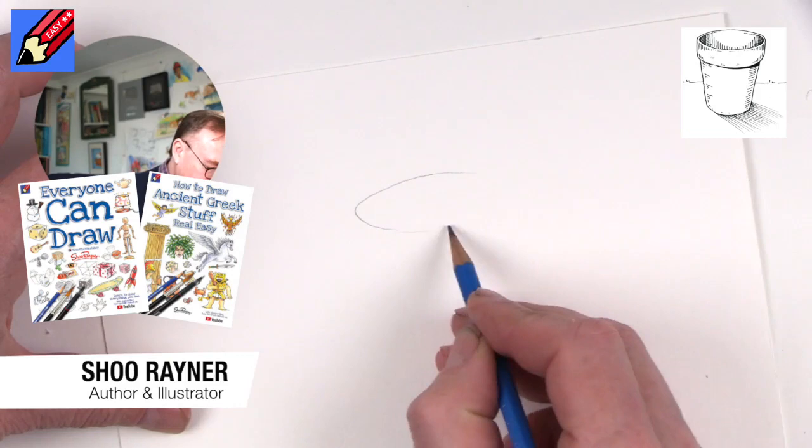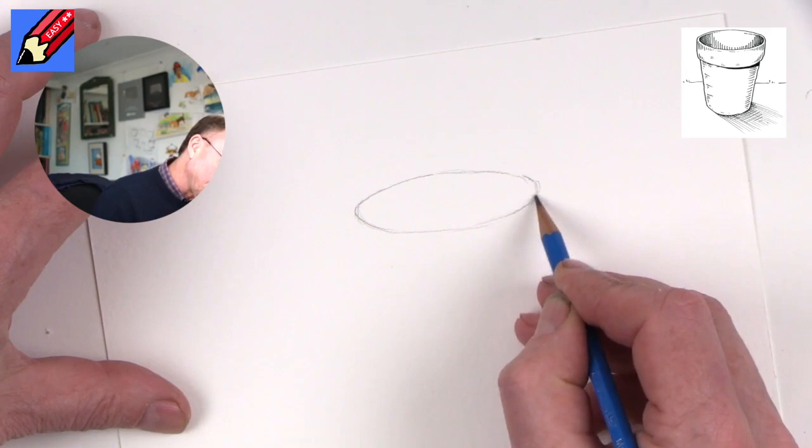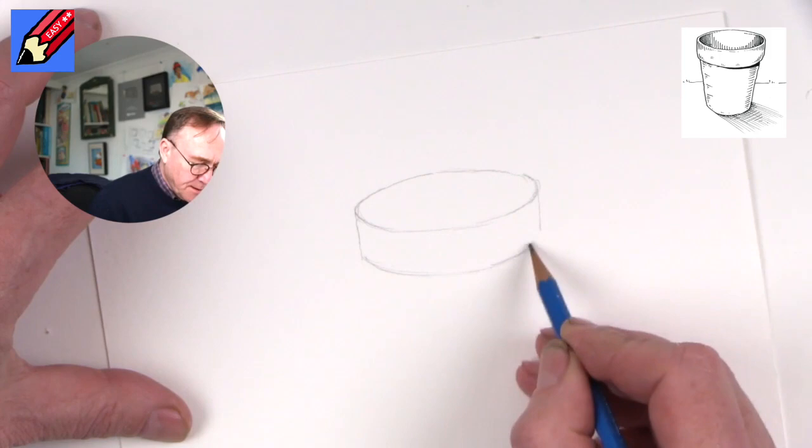It's actually a circle that's been squashed. It's not an oval—an oval is more of a square with round corners. So this is a circle that's been squashed. Then we want to drop lines straight down from the side to about there, and then we're going to copy this curve just underneath there like that.